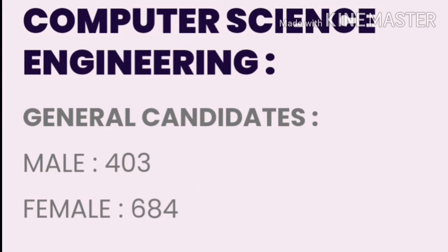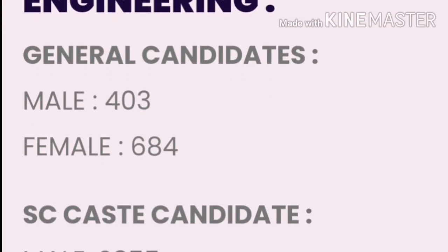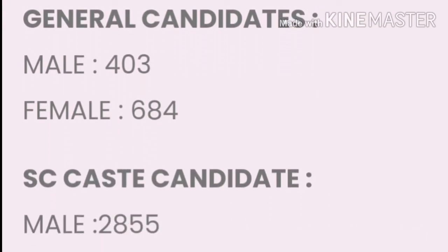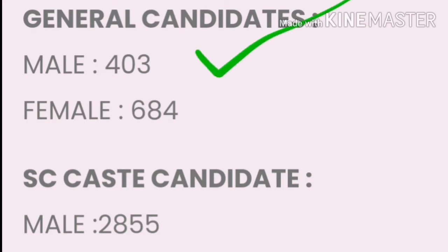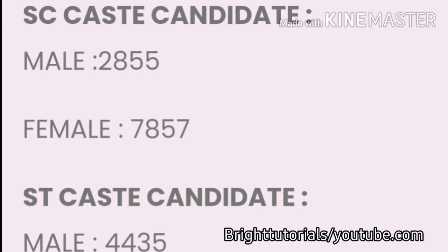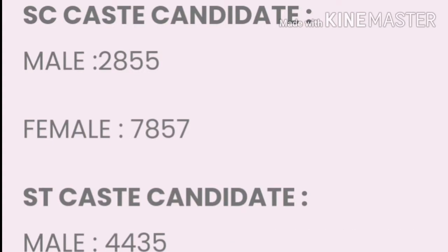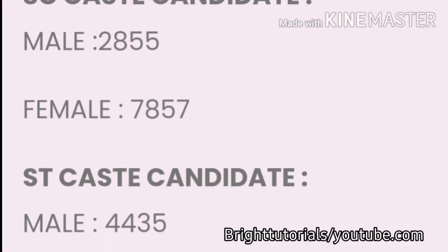We will start with the cutoff of Computer Science Engineering (CSE). For getting a seat in CSE at OU, for general candidates the rank cutoff for male is 403 and for female it is 684. Moving towards the SC caste: for male the cutoff is 2855 and for female it is 7857.